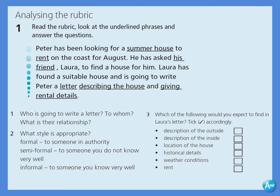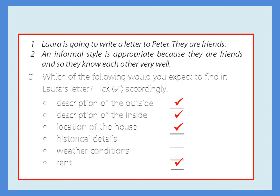Okay, now let's go over and check the answers to the questions. Let's read the short passage again. Peter has been looking for a summer house to rent on the coast of August. He has asked his friend, Laura, to find a house for him. Laura has found a suitable house and is going to write Peter a letter describing the house and giving rental details. So here are the answers. Laura is going to write a letter to Peter. They are friends. The second question — what style are we going to use? Definitely, it will be an informal style. It is more appropriate because they are friends and they know each other very well.